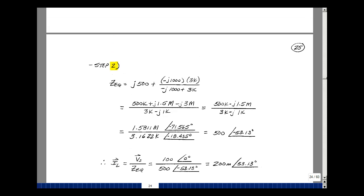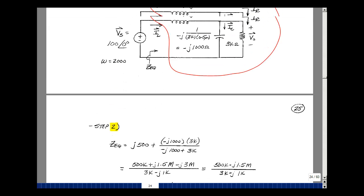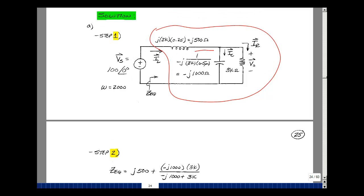So I know this current now coming in here, it's going to split between these two elements, come back out the other side. So we can use current divider here, even though we don't have a current source. We do have a known current entering this parallel combination.